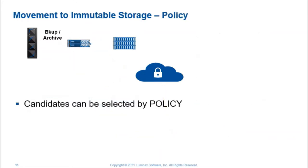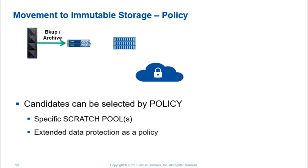For any tape environment, data groups can be moved to immutable storage by policy — policies applying to specific scratch pools or to all. This gives extended data protection by policy. Simply decide which policies require additional copies on immutable storage and let Luminix Ransom Protect do the rest.